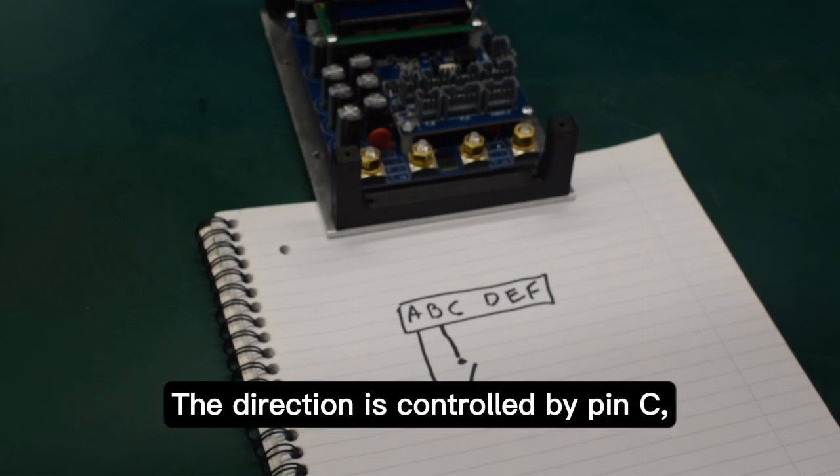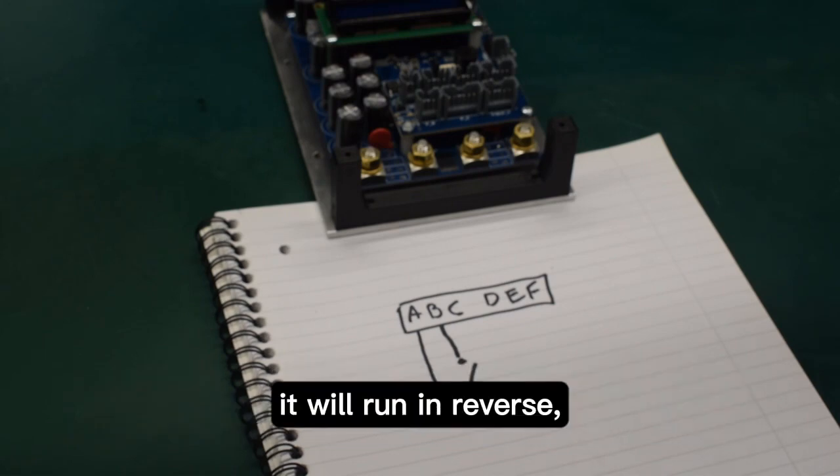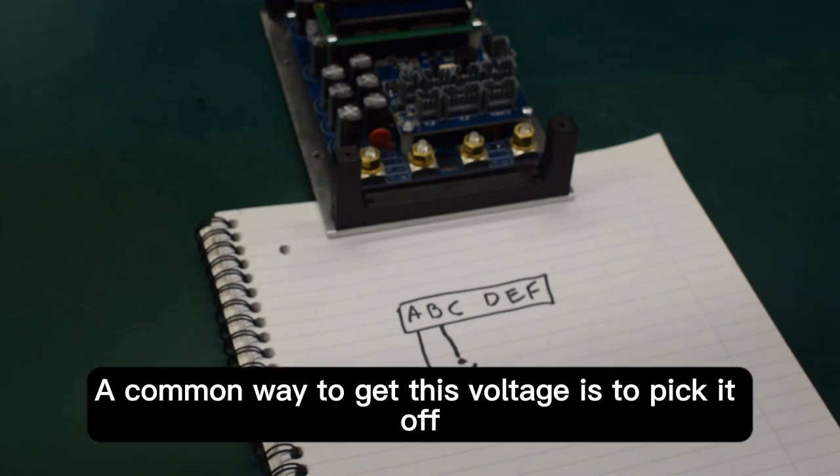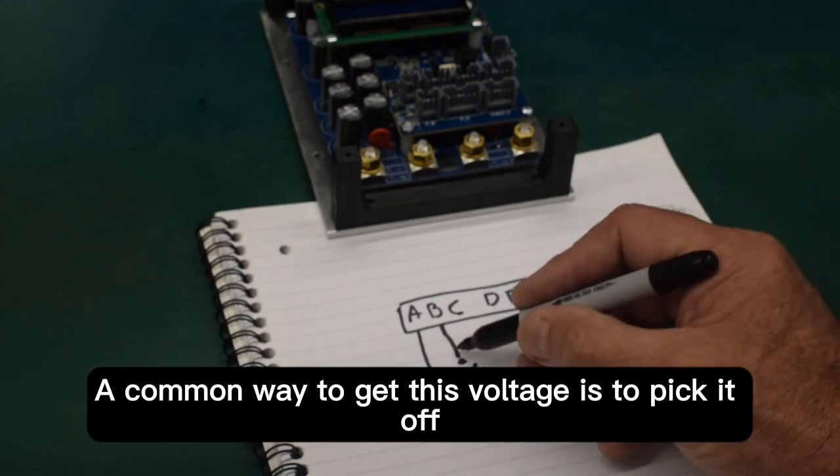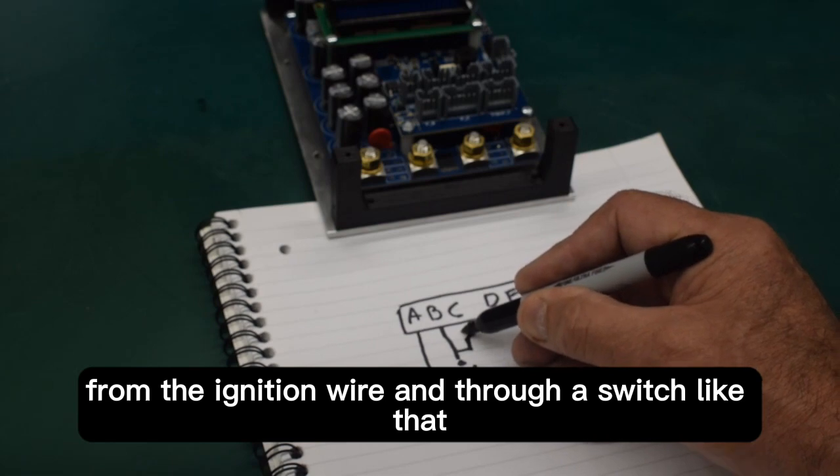The direction is controlled by pin C. If the Pro 160 detects battery voltage on this pin it will run in reverse. If it doesn't it will run forward. A common way to get this voltage is to pick it off from the ignition wire and through a switch like that and into pin C.